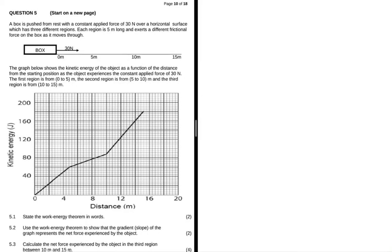A box is pushed from rest with a constant applied force of 30 newtons over a horizontal surface which has three different regions. Each region is 5 meters long and exerts a different frictional force on the box as it moves through. We have a diagram that clearly demonstrates what the statement is saying. The graph below shows the kinetic energy of the object as a function of the distance from the starting point as the object experiences the constant applied force of 30 newtons. The first region is from 0 to 5 meters, the second region is from 5 to 10, and the third is from 10 to 15.